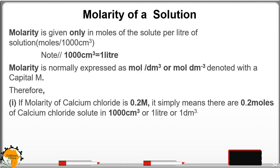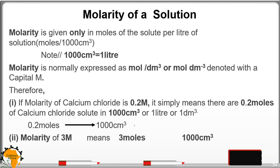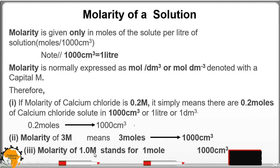For example, if the Molarity of calcium chloride is 0.02 M, it simply means there are 0.2 moles of calcium chloride in a solution of 1,000 centimeters cubed, or 1 liter, or 1 decimetre cubed. If you are given a Molarity of 3, it means 3 moles in a thousand — 3M means 3 moles in a thousand. What about 1.0 M? It stands for 1 mole in a thousand centimeters cubed.